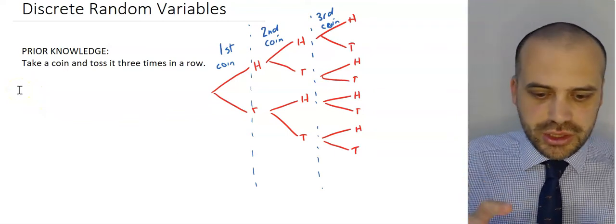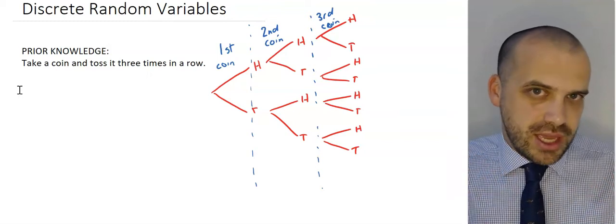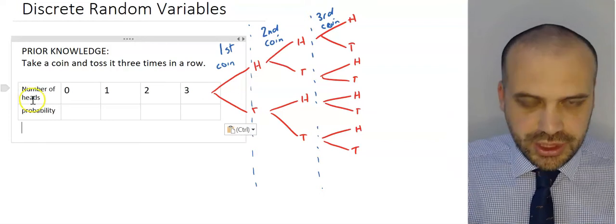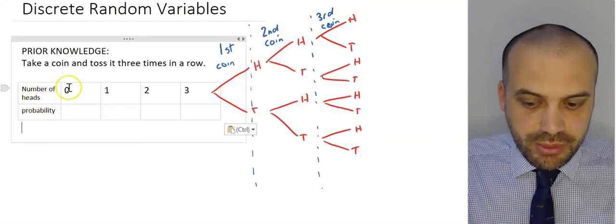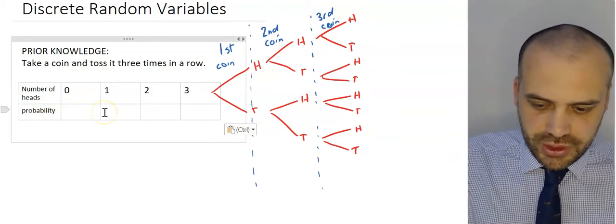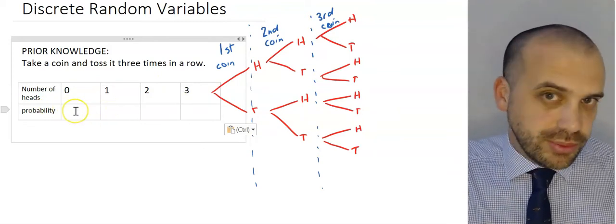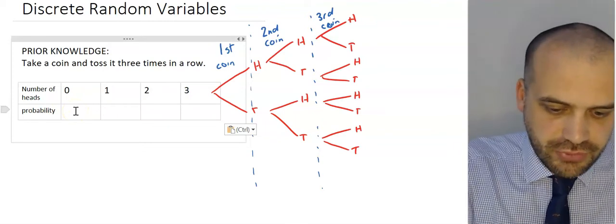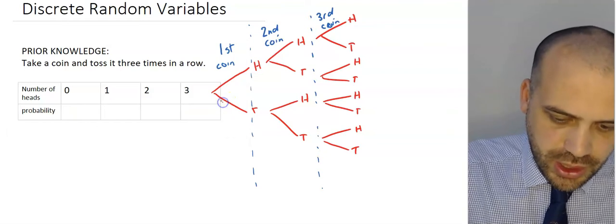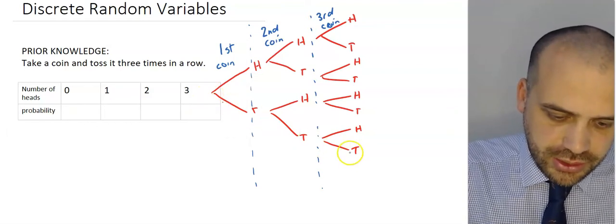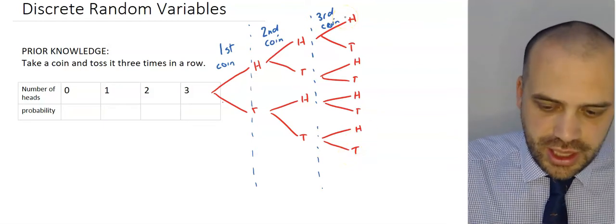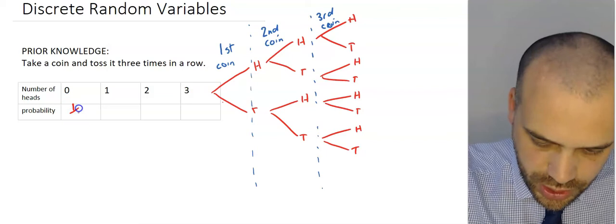Now let's consider what happens with the number of heads that you get from these three coin tosses. We're going to summarize that information in a table. The number of heads might be zero, one, two, or three, and we can find the probability of each of those. The probability of getting zero heads: the only way this happens is tail, tail, tail. There's only one way to get zero heads, and there are eight total outcomes, so the probability is one in eight.